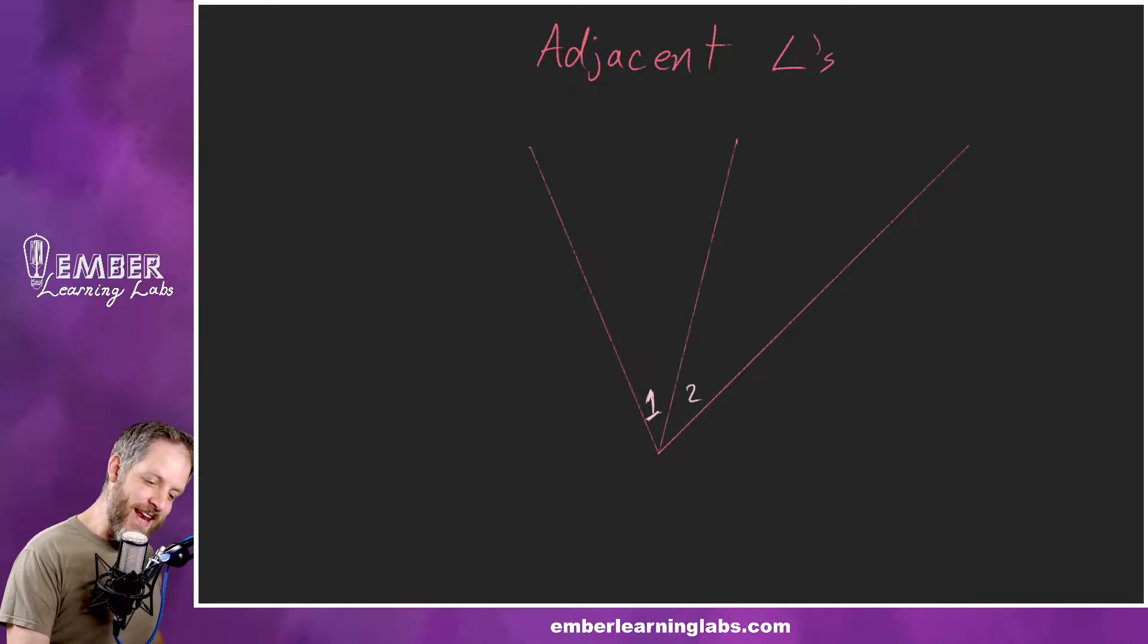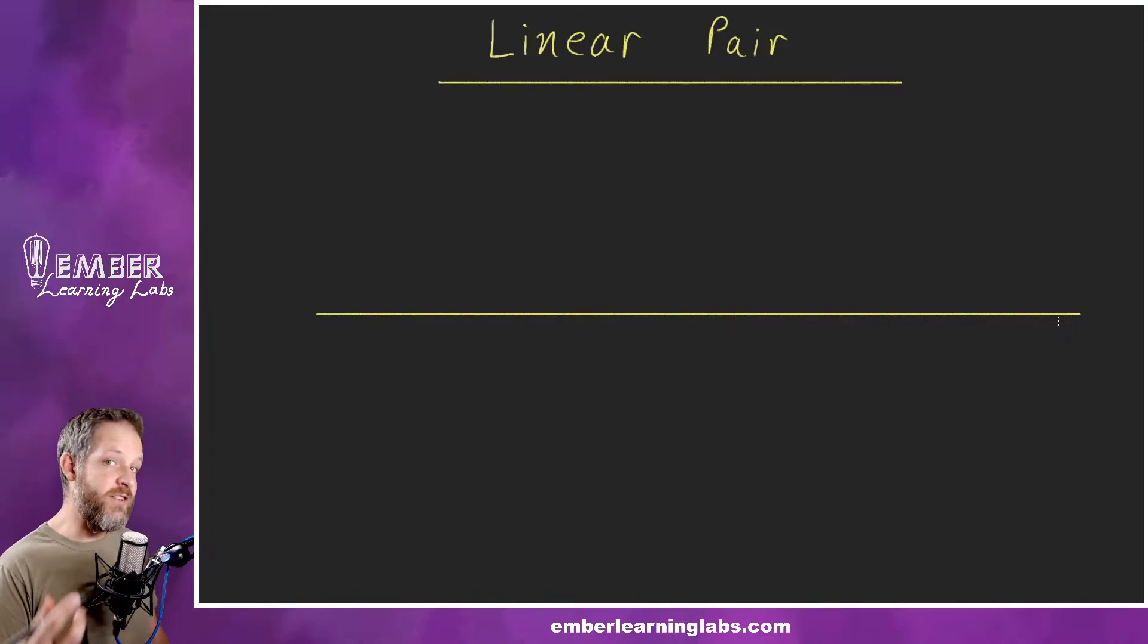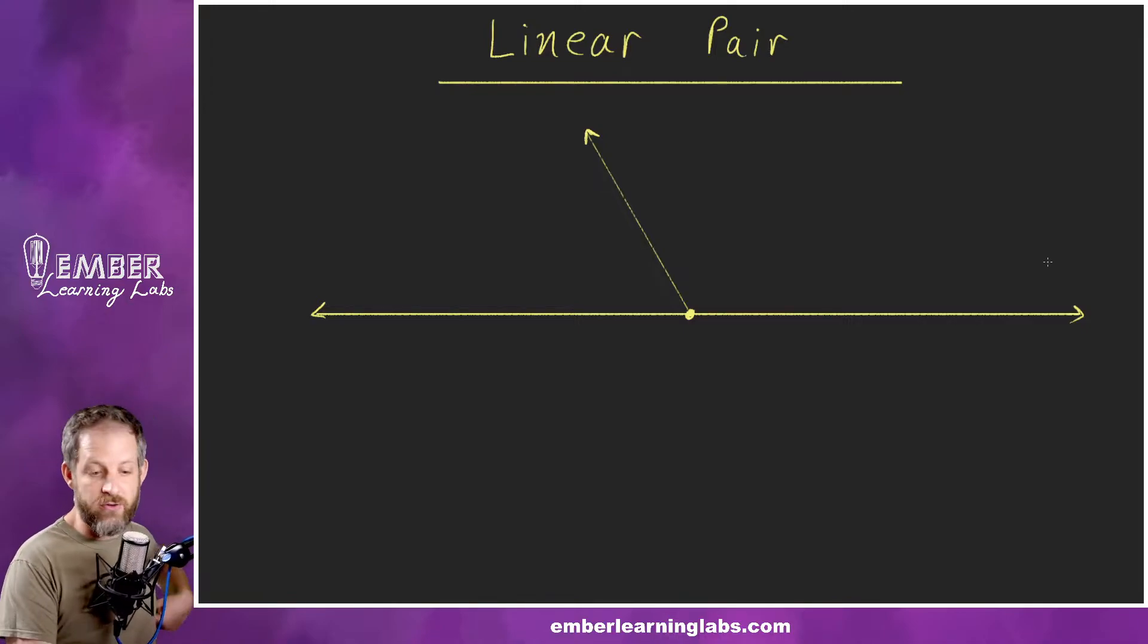The next thing that we're going to define is a linear pair. What does the word linear mean? Well, it means a function or thing that makes a line. So there's a pair of things on a line that should kind of give us a hint as to what's going down here. A linear pair is adjacent angles that have that one edge of the angle is on the same line.